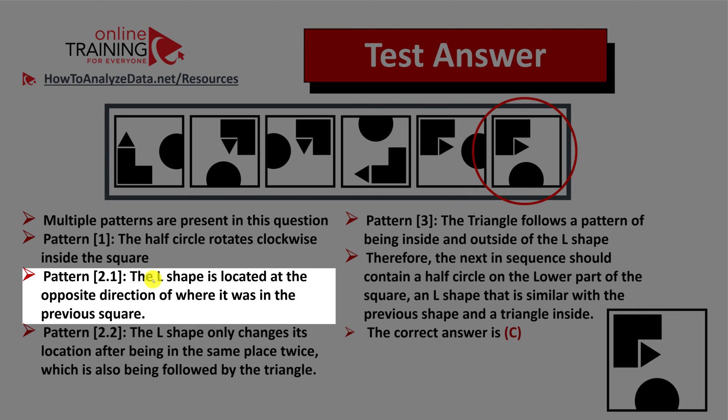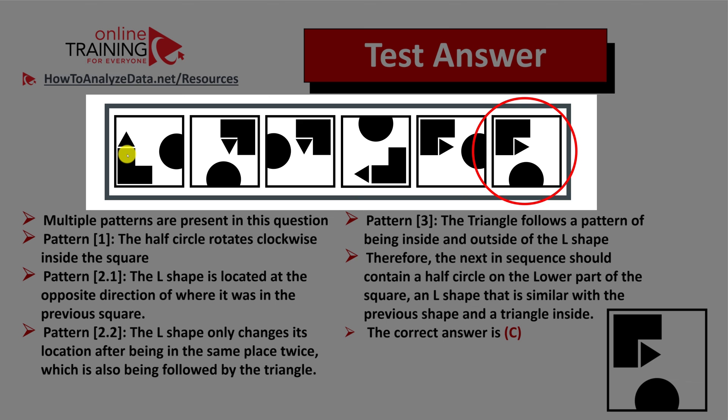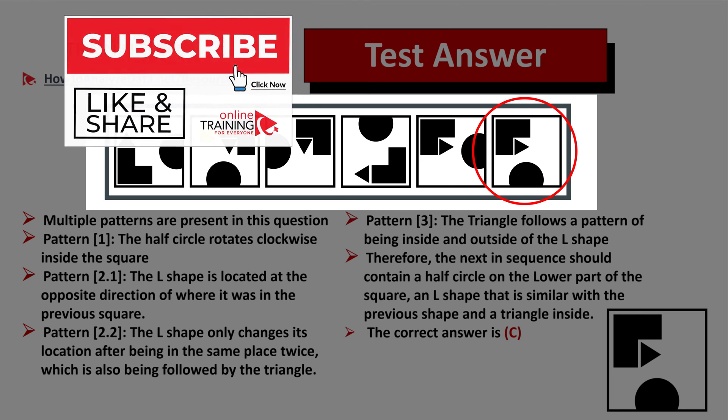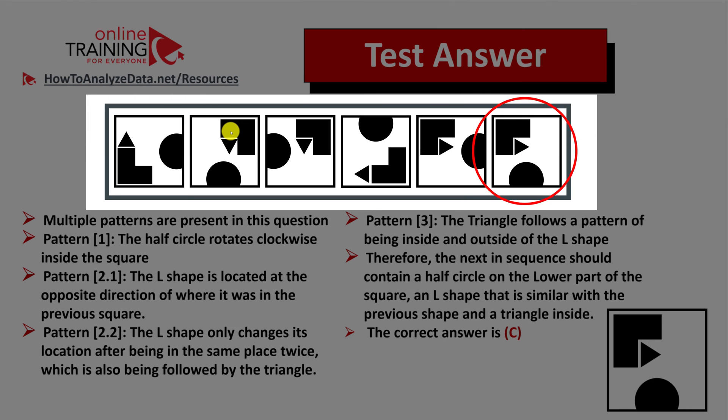The second pattern is where the L shape is located at the opposite direction of where it was in the previous square. So you see that the L shape in the first square is located in the bottom left. In the next square, it's located in the upper right corner.